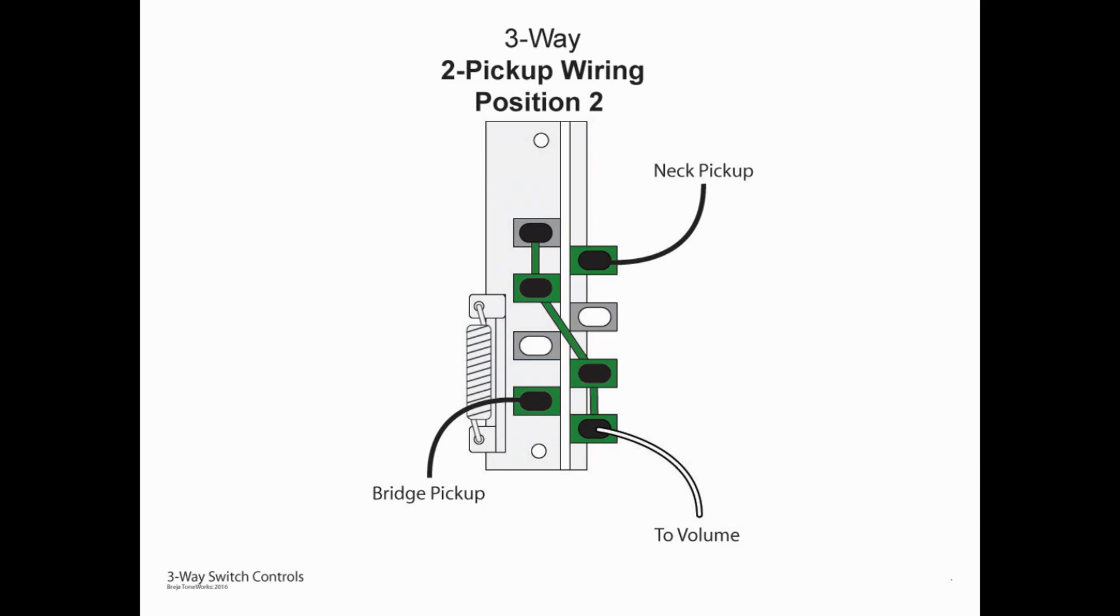So if we move the switch to position two you can see the bridge pickup coming into A4 is linked to A2 which via the jumper will get us to the volume pot. On the right side the neck pickup is coming into B1 which is linked to B3 which is part of the jumper scheme and that will get us to our volume pot as well. So that's how in position two we have the bridge and the neck pickup combined.